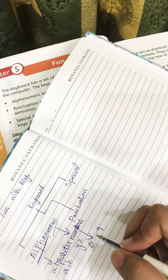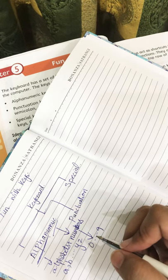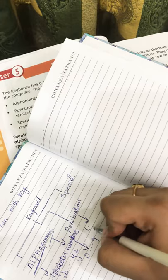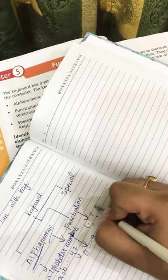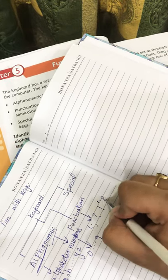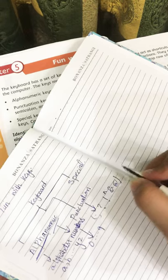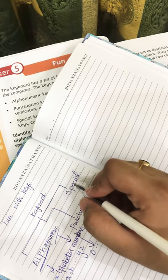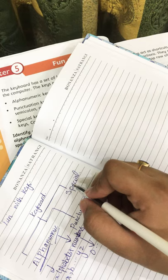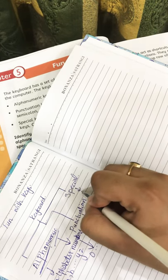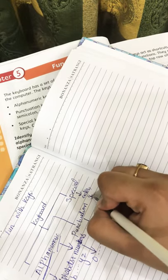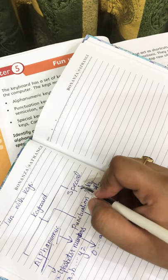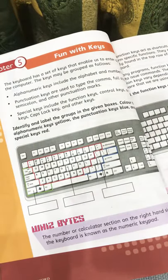With the help of alphanumeric keys, we can type our text in English or do mathematical calculations. Punctuation keys include the full stop, comma, question mark, exclamation mark, and other signs. Special keys are those keys with the help of which we can perform some functions, just like the Enter key, Shift key, Space Bar key, Backspace key, etc. Every key has some kind of function.